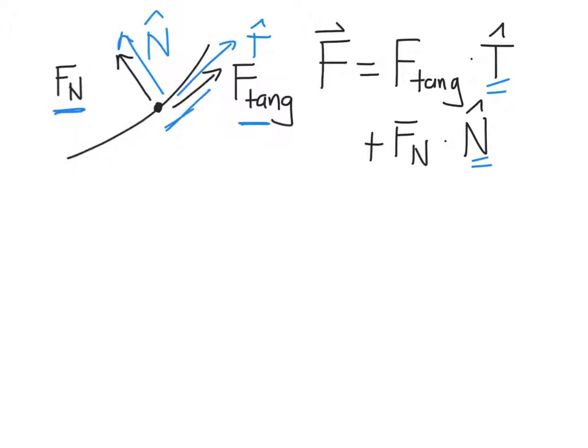The velocity vector, we've already argued, can be written as the displacement along the wire with respect to time times the tangent vector. The velocity has to be along the wire. There's no normal component to the velocity by definition. Therefore, when we take a time derivative of the velocity vector, in other words calculate the acceleration, we're going to get two terms.